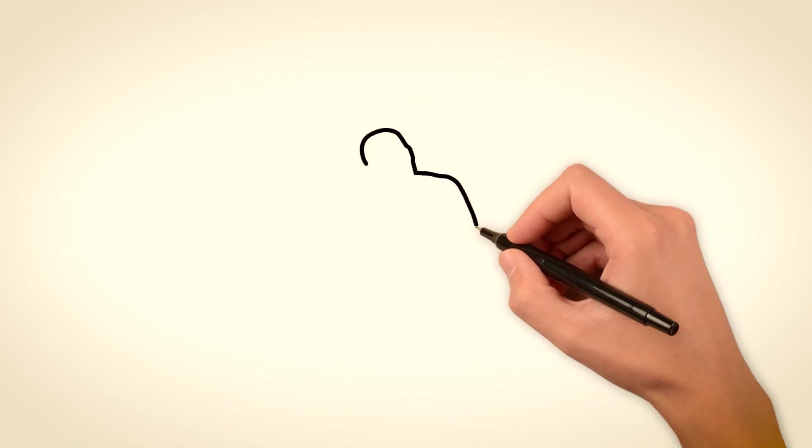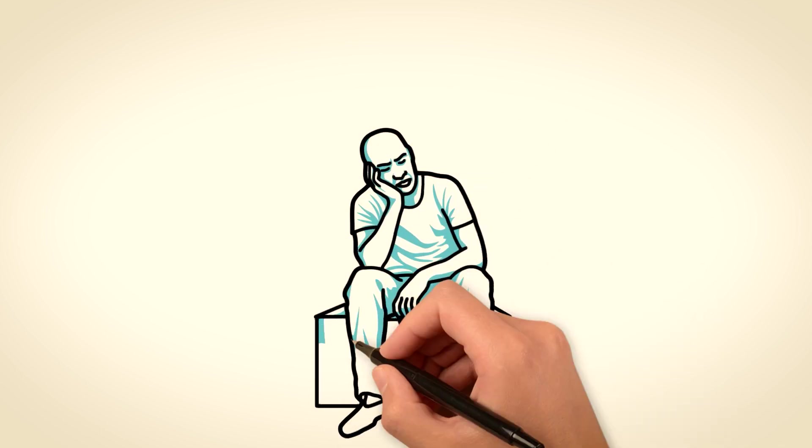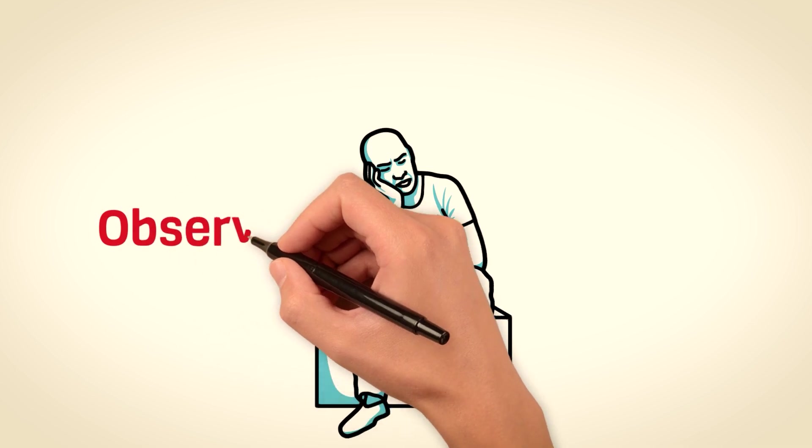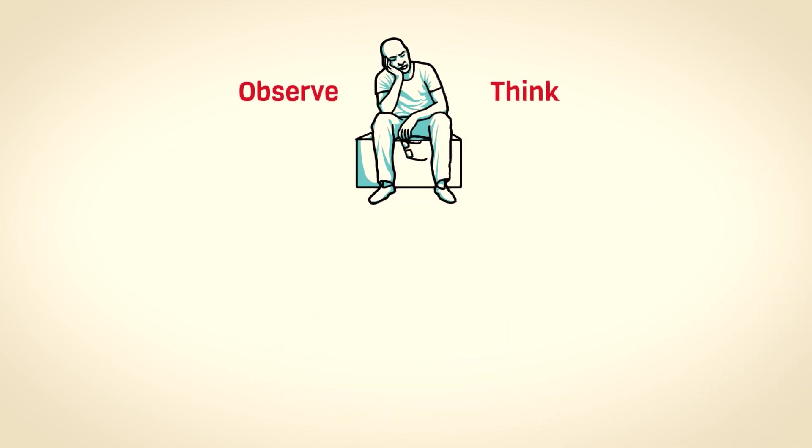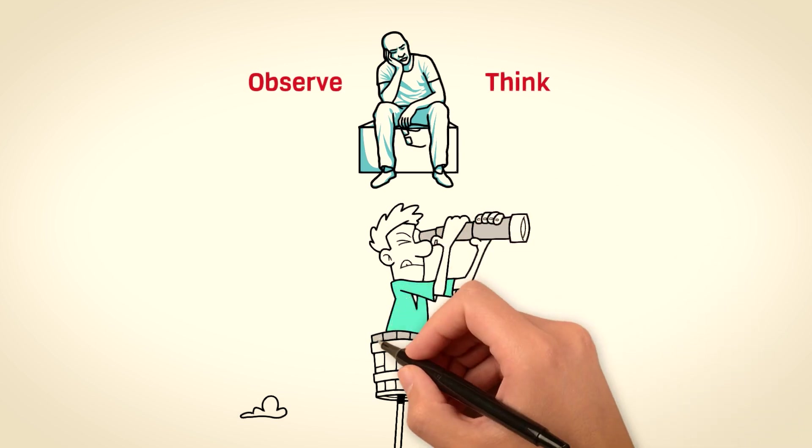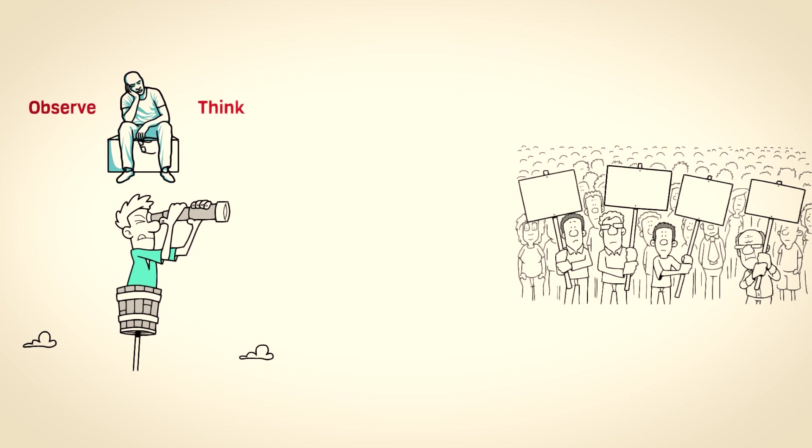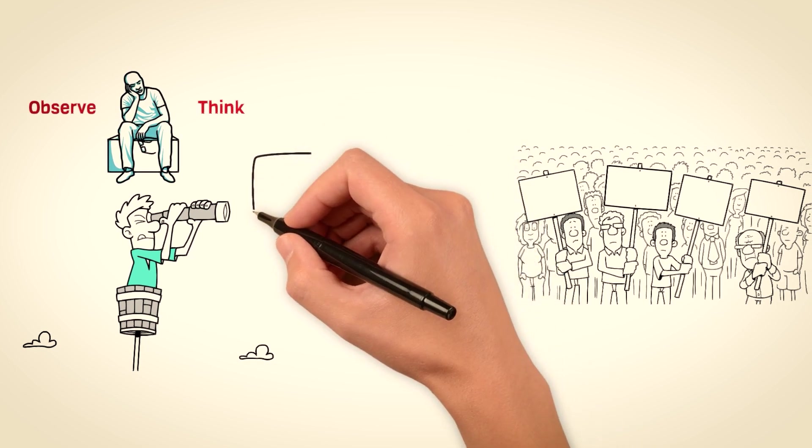Allows them to observe and think. Sigma males are characterized by their introspective nature and observant qualities. They possess a keen sense of perception and often find themselves analyzing situations and individuals from a distance. Living in the shadows allows them the opportunity to remain detached and assess situations objectively, ultimately making informed decisions.